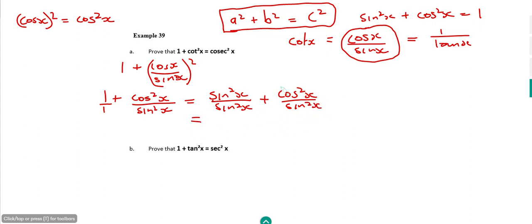Now we can add the numerators because we've got the common denominator there. So we can say that's going to be sin²x + cos²x all over sin²x.